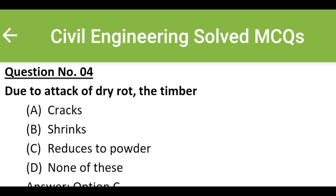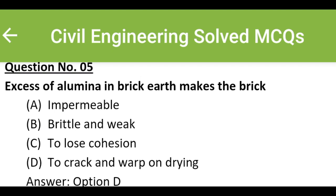Due to attack of dry rot, the timber: Option A: cracks, Option B: shrinks, Option C: reduces to powder, Option D: none of these. The correct answer is Option C: reduces to powder. Excess of alumina in brick earth makes the brick: Option A: impermeable, Option B: brittle and weak, Option C: to lose cohesion, Option D: to crack and rub on drying. The correct answer is Option D: to crack and rub on drying.